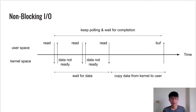In the non-blocking I/O model, the system call returns immediately if data is not available. Then the user procedure keeps polling or does something else until the data is available. Finally, if data is available, the processor will trap into the kernel and execute the corresponding system call handler, which copies the data from kernel to user space.